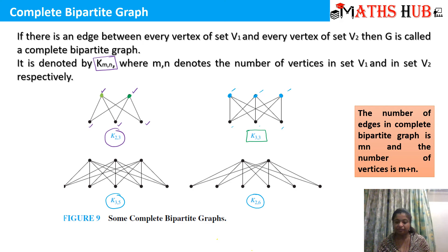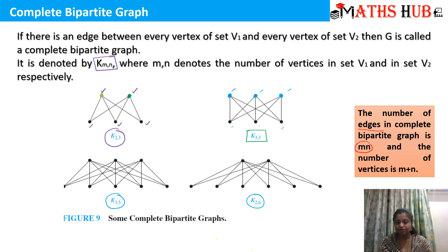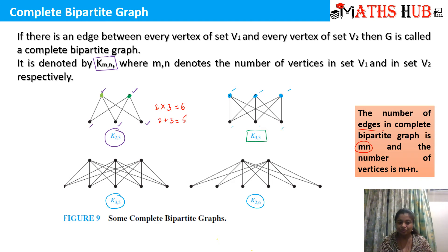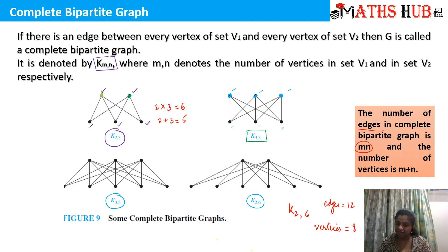After complete bipartite graph, there is one more important result: how many edges does a complete bipartite graph have? The number of edges in K(m,n) is m × n. For example, in K2,3 the number of edges is 2 × 3 = 6, and the number of vertices is 2 + 3 = 5. Similarly, K2,6 will have 2 × 6 = 12 edges and 2 + 6 = 8 vertices.